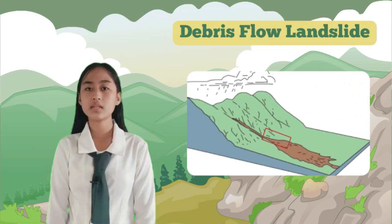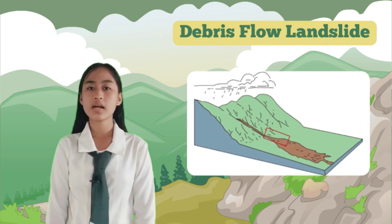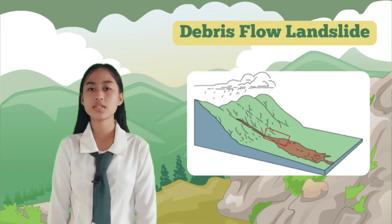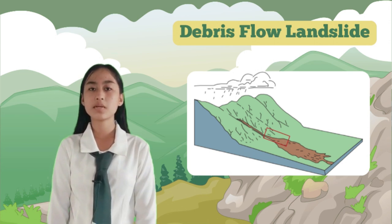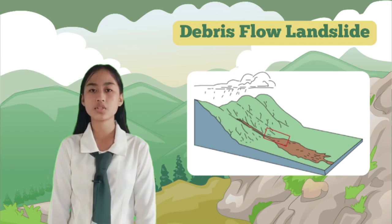Debris flows are rapid, downhill movements of water-saturated soil, rocks, and other debris. They often occur in steep mountainous regions and are commonly triggered by intense rainfall or rapid snow melt. Debris flows can be extremely destructive as they can carry large boulders and debris, causing significant damage to structures and infrastructure.